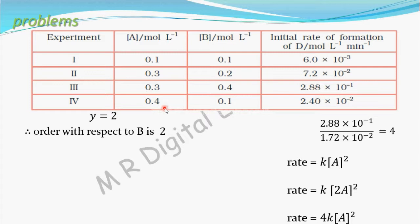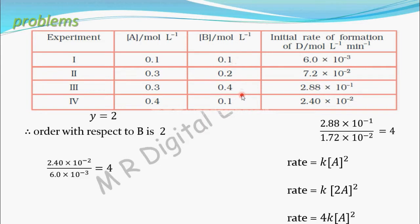Since only the concentration of A is varying, the rate increases with respect to A only. The rate increases from 6.0 × 10⁻³ to 2.40 × 10⁻². Dividing 2.40 × 10⁻² by 6.0 × 10⁻³ gives 4. So when you increase the concentration of A four times, with B kept constant, the rate also increases four times.